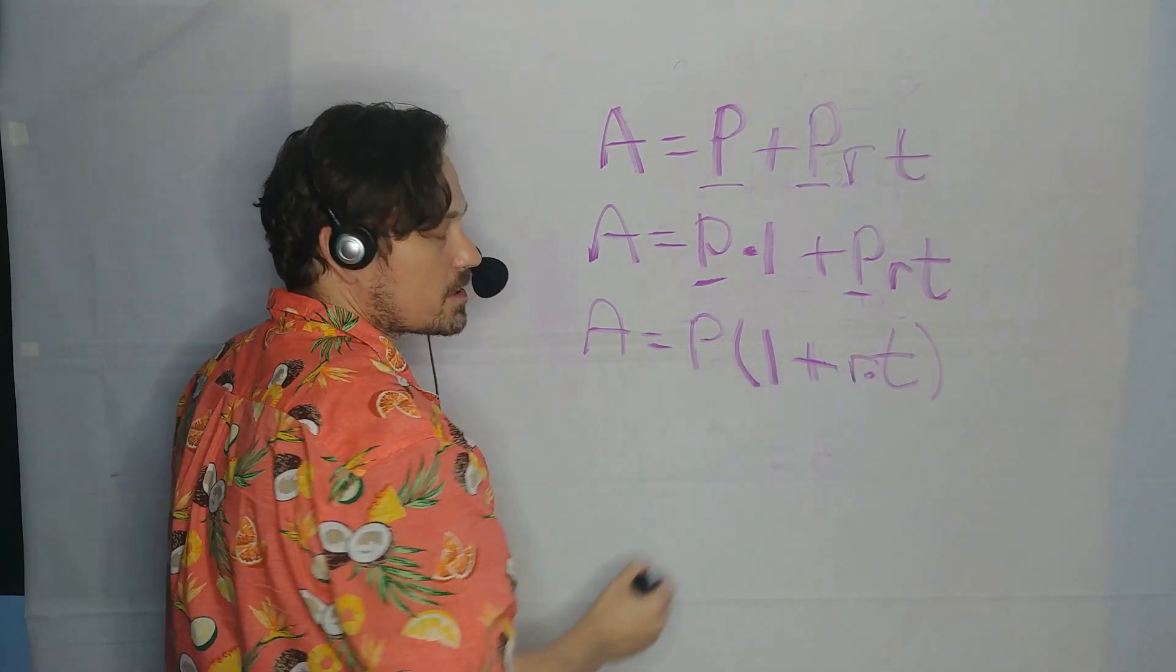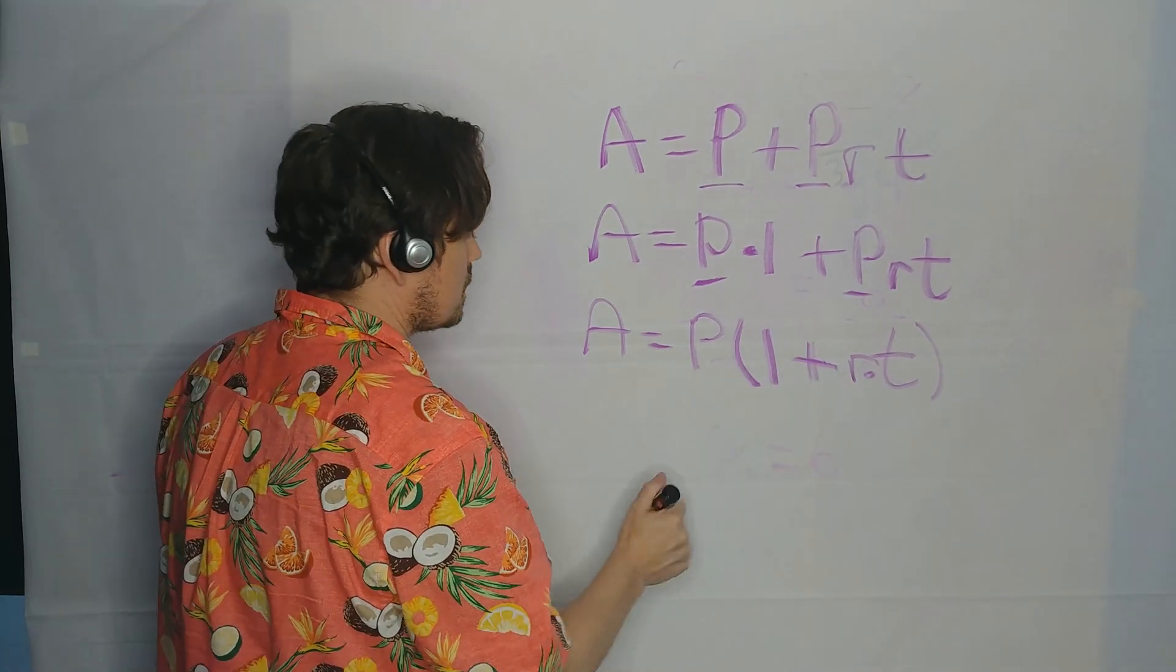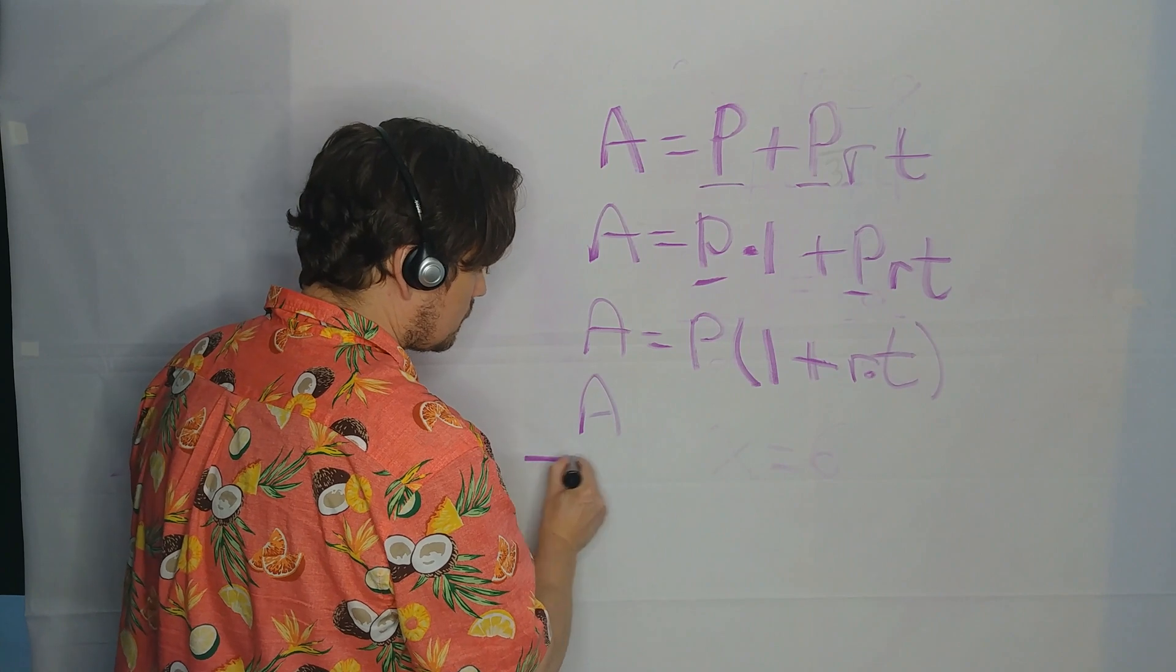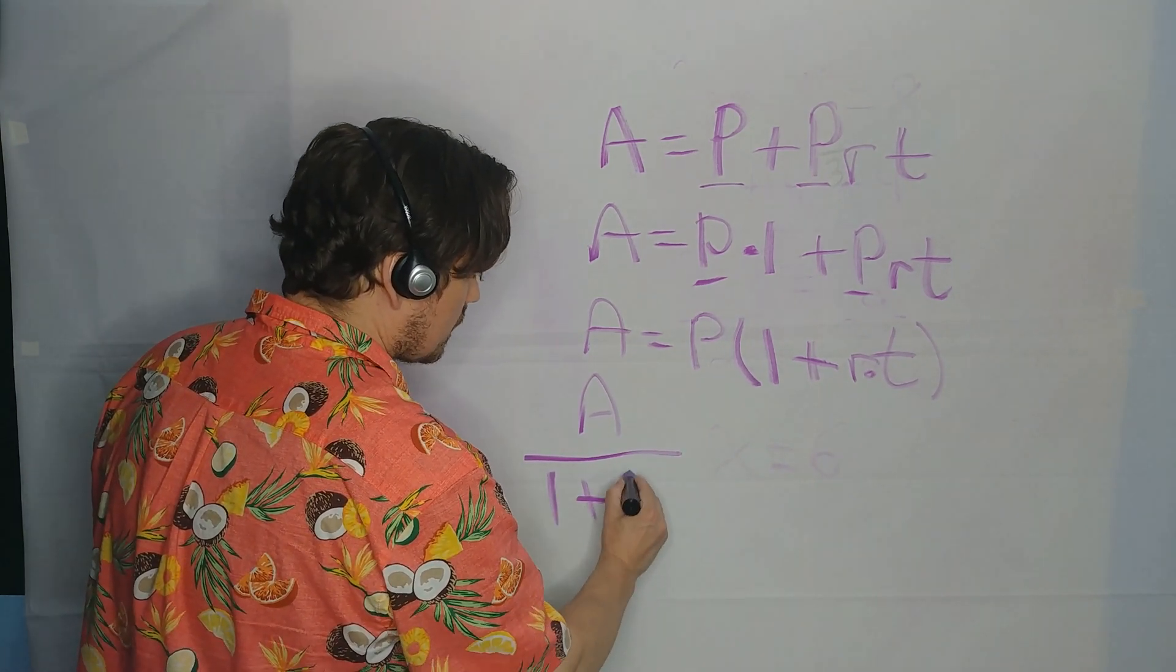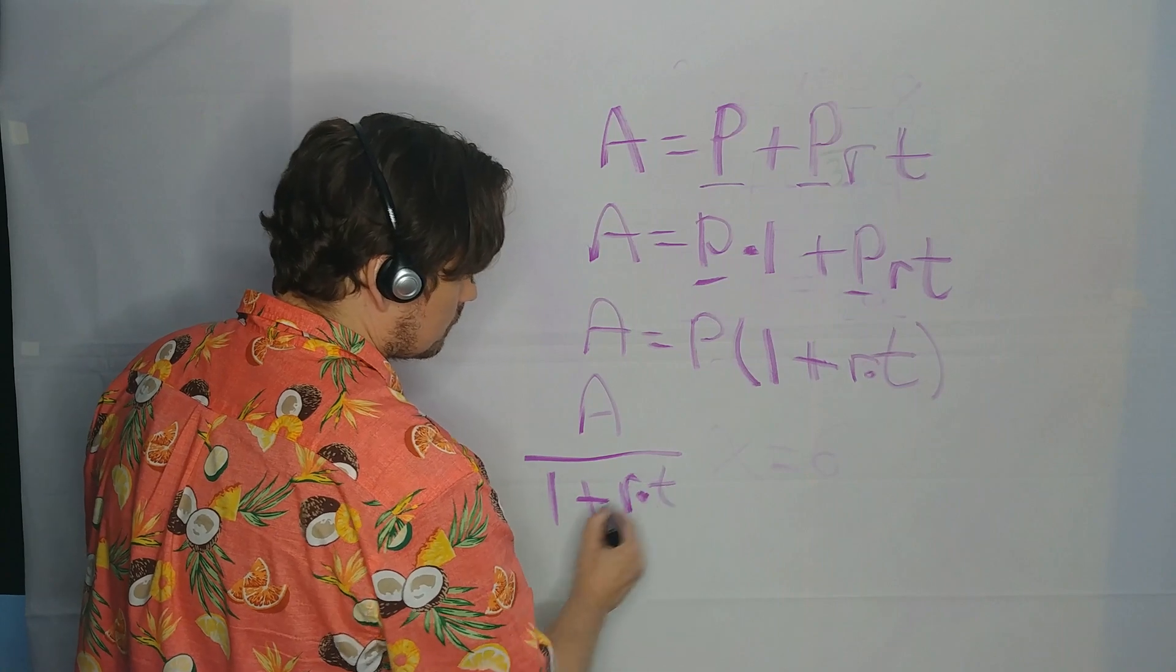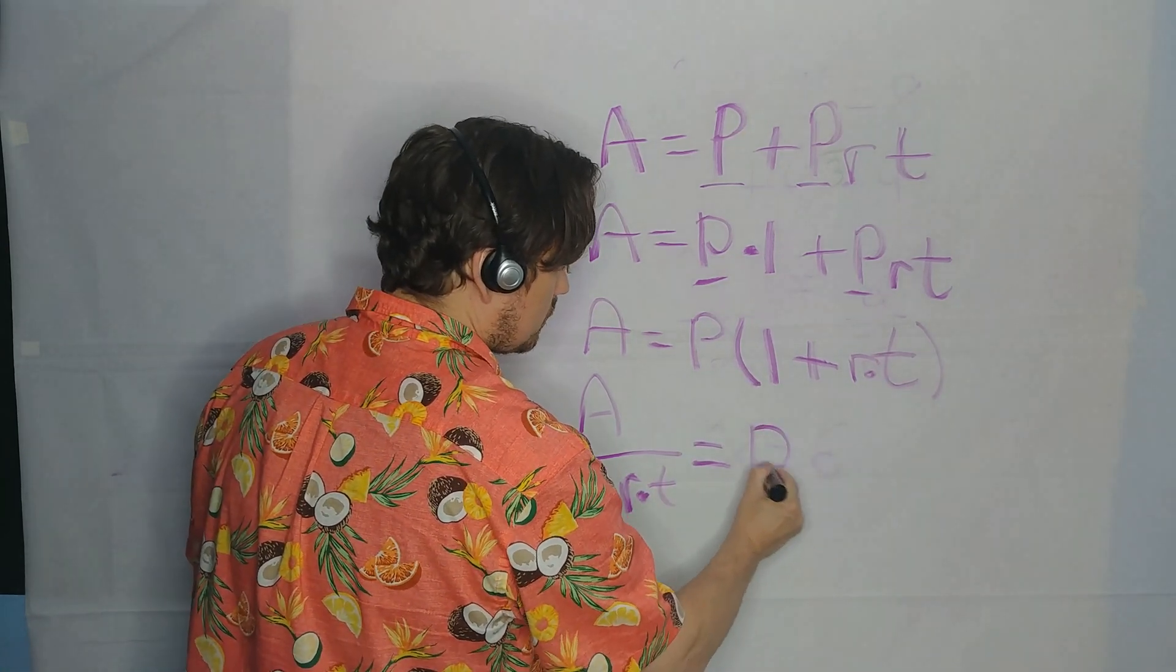Now, P is being multiplied by this expression, so just to divide both sides. So A divided here by 1 plus R times T is equal to P.